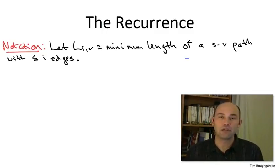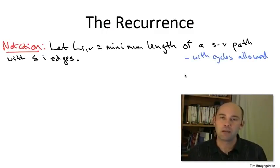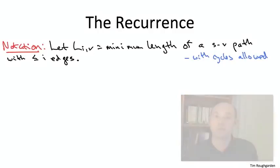For that reason, we have to allow cycles in shortest paths from S to V. We're not concerned about the cycle being traversed an infinite number of times because we have this finite budget I on the number of edges that we permit.